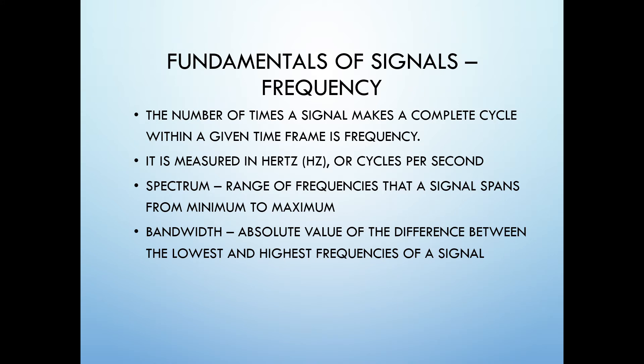The frequency of a signal is the number of times a signal makes a complete cycle within a given time frame. The length or time interval of one cycle is called its period. The frequency of an analog signal is measured in Hertz, which is equal to cycles per second.